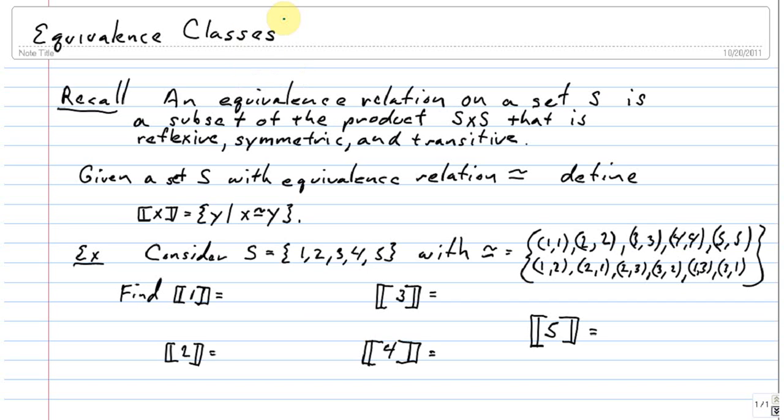So first of all, recall what an equivalence relation is. An equivalence relation on a set S is a subset of the product, so subset of S cross S, that is reflexive, symmetric, and transitive.